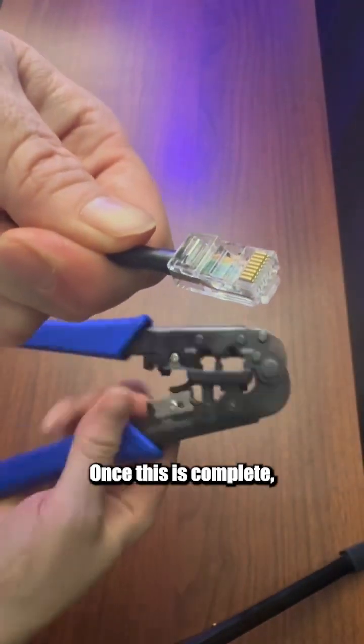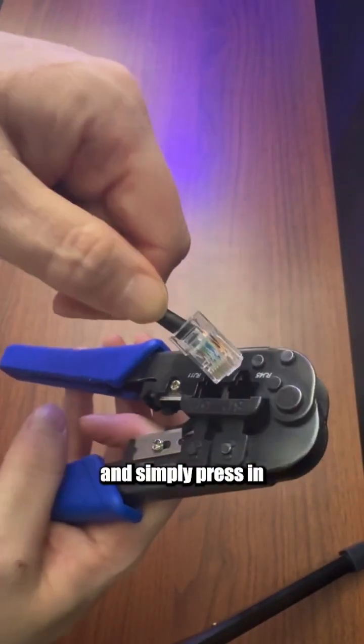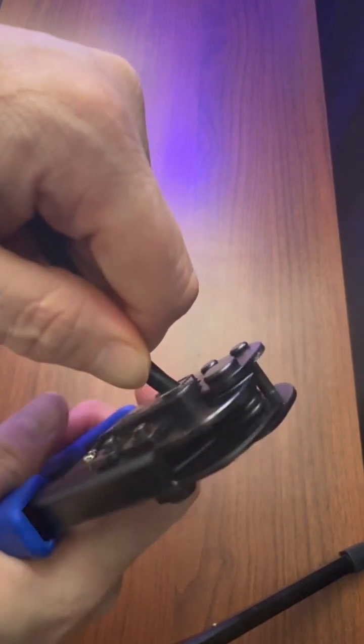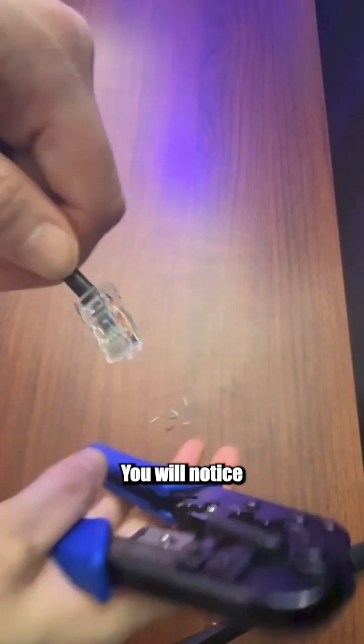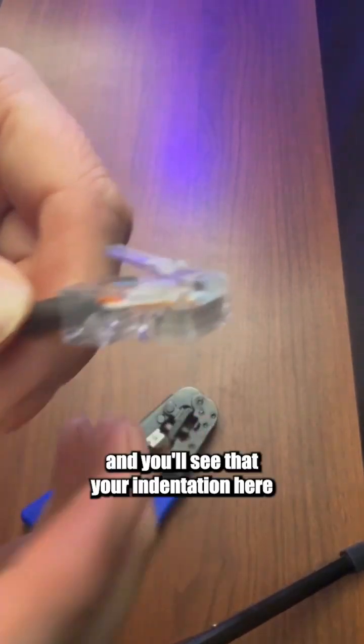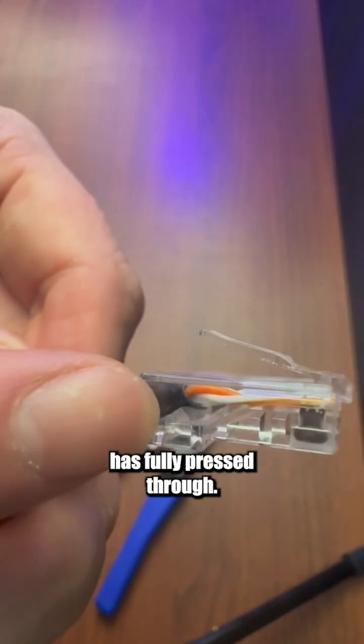Once this is complete, grab your RJ45 end, simply press in, and click. You will notice the click will usually occur, and you'll see that your indentation here has fully pressed through.